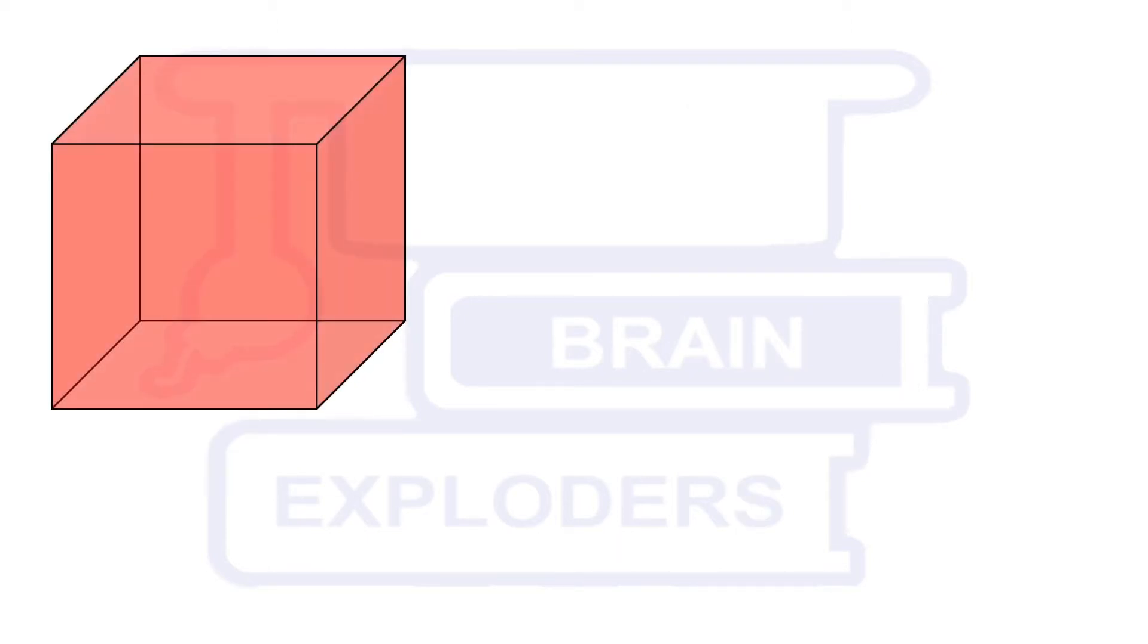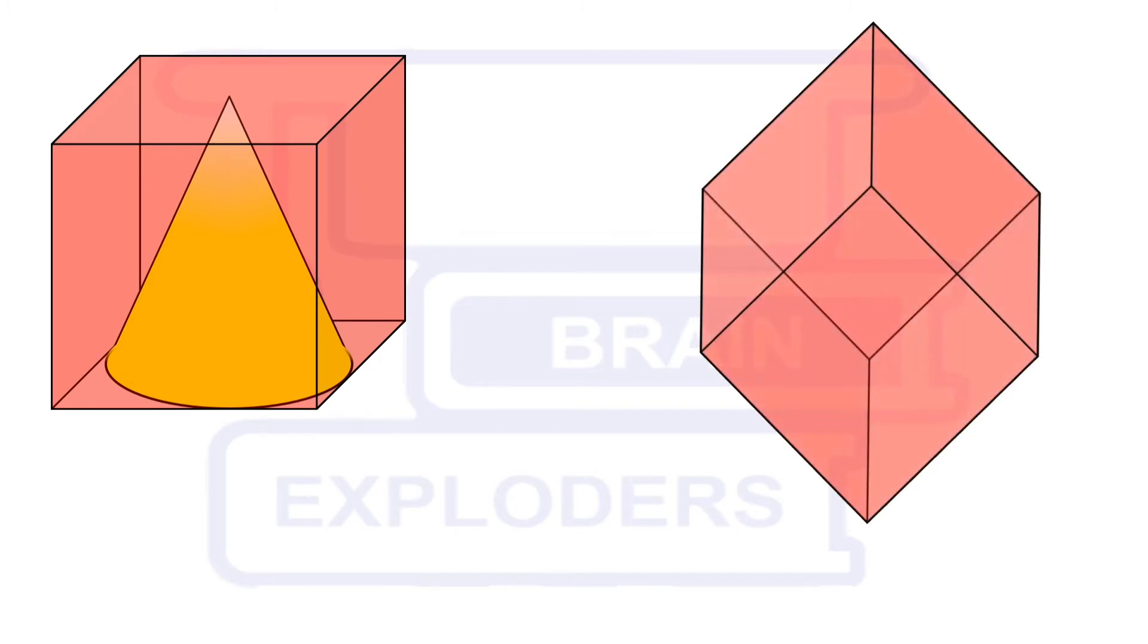Now, we have to carve out a cone of maximum volume from this cube. There is no restriction for the base of the cone. It may or may not lie on the surface of the cube. So let us try another configuration in which vertex of cone coincides with one of the vertices of cube and its base is perpendicular to the diagonal of the cube.